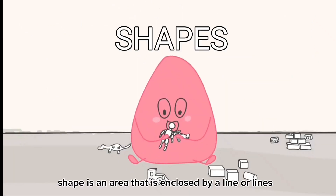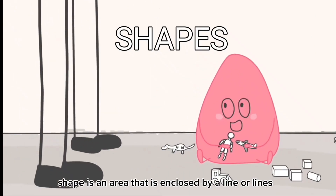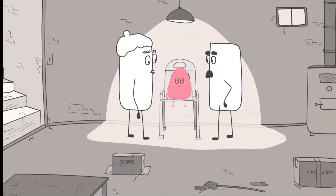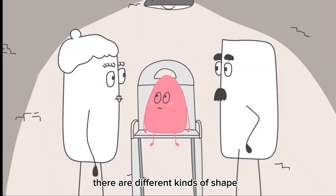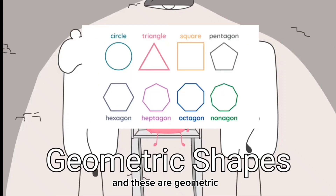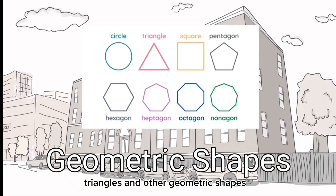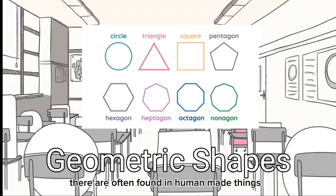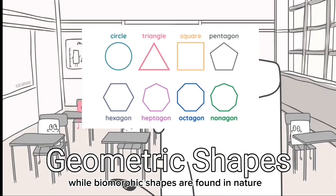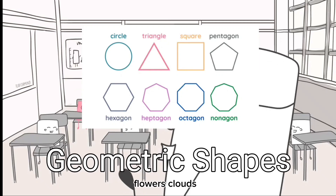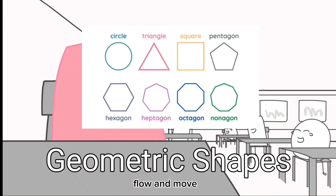The second element is shape. Shape is an area enclosed by a line or lines. Shapes are two-dimensional figures with height and width. Geometric shapes are circles, squares, rectangles, triangles, and other regular forms, often found in human-made things like buildings and machines. Biomorphic shapes are found in nature and may look like leaves, flowers, clouds — things that grow, flow, and move.